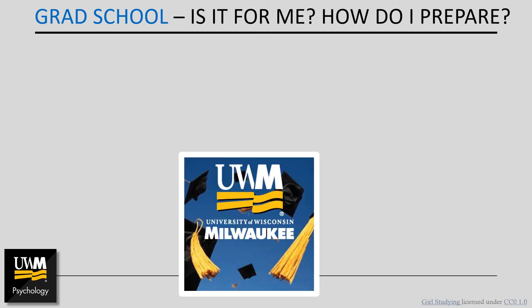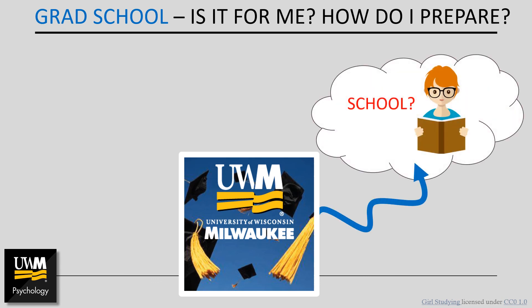Something to consider well in advance of graduation is what you'd like to do next. It's possible that a graduate degree will be required for the kind of work that you'd like to do. If this applies to you, it's important to determine how best to prepare so that you're setting yourself up for success in what can be a very competitive admissions process. Some programs end with a master's degree and professional certification — examples include the master's in counseling psychology and the master's in social work. Typically, these are two-year programs that combine specialized coursework with internships and experience in the field, and culminate in a certification test.